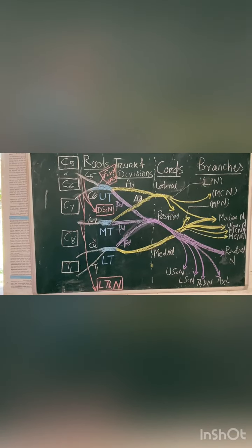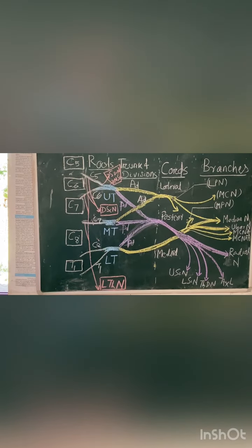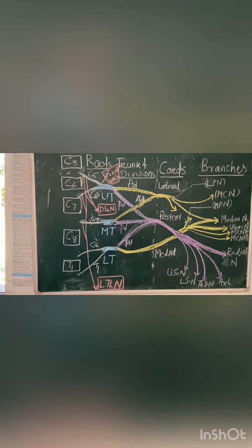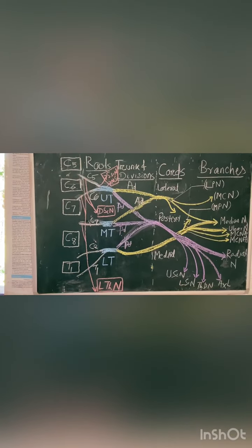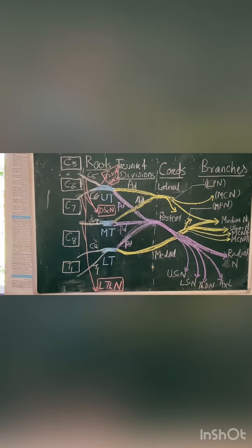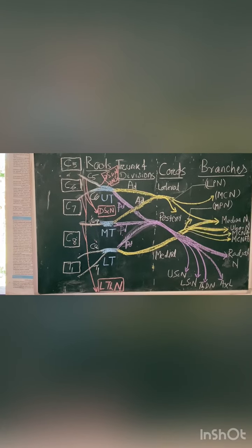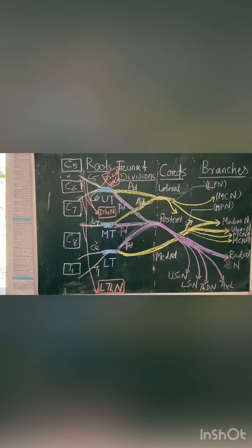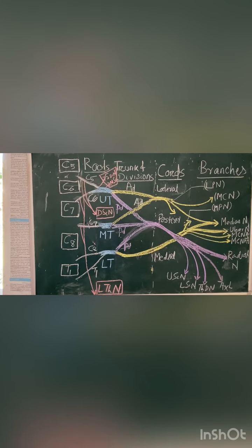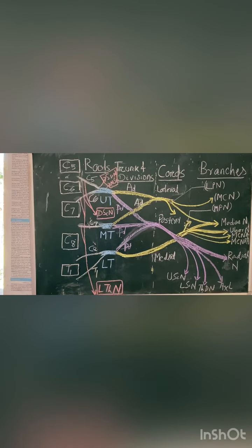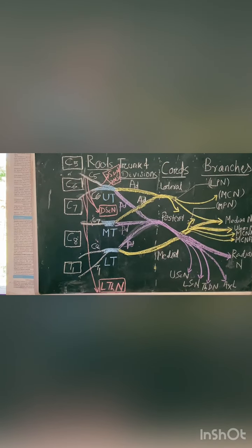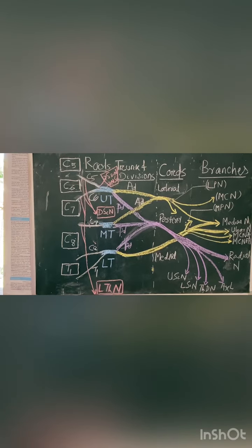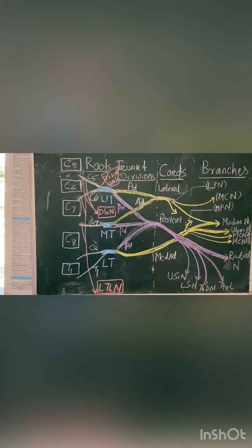In addition to the thirteen branches from the cords, there are four more branches. Two are from the roots and two are from the upper trunk. The branches from the roots are the long thoracic nerve, formed by contributions from C5, C6, and C7, and the dorsal scapular nerve, formed by contributions from C5 and sometimes C6. The upper trunk gives rise to two branches: the suprascapular nerve and the nerve to subclavius. The branches from the roots and trunks are shown in boxes.